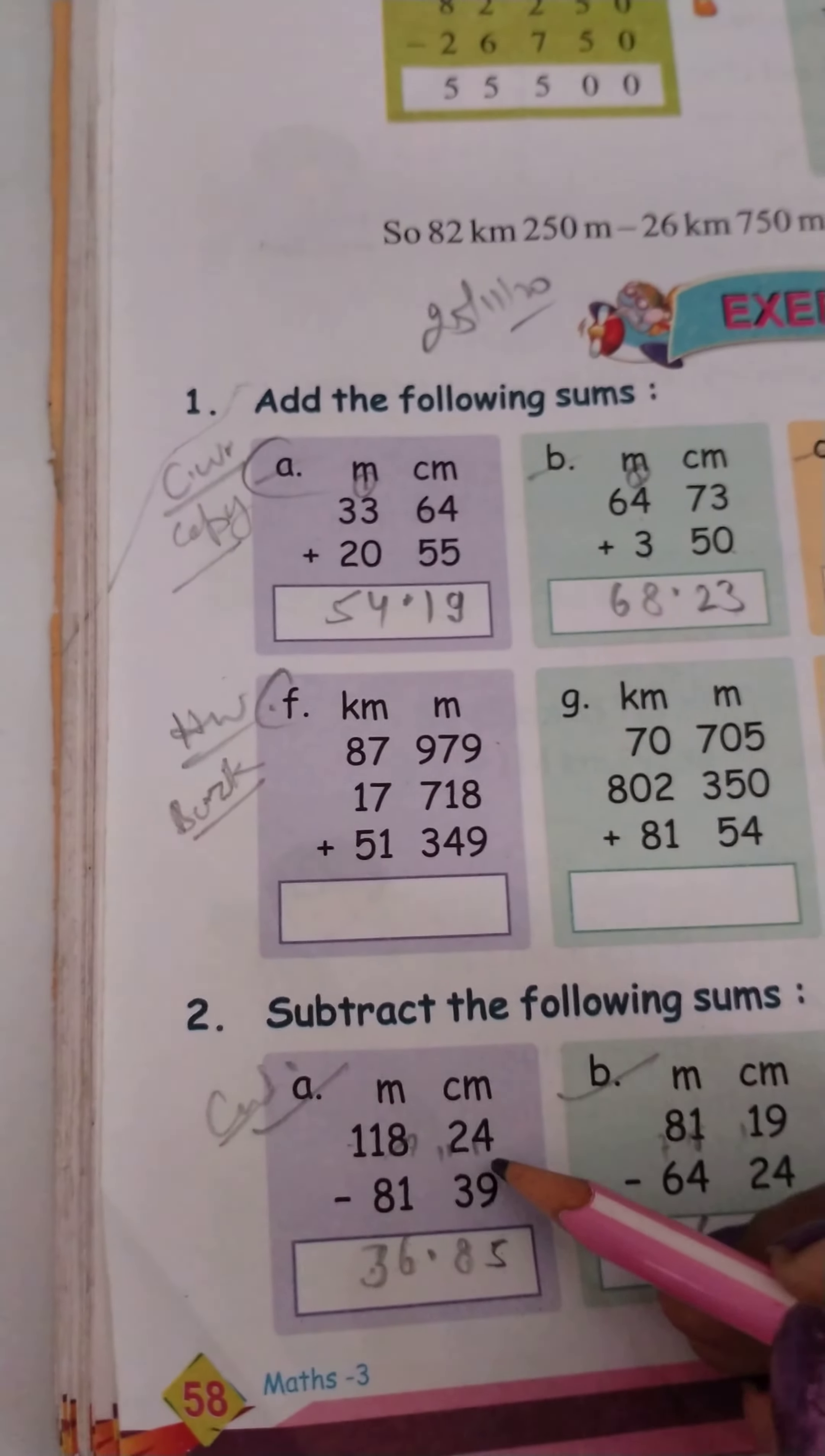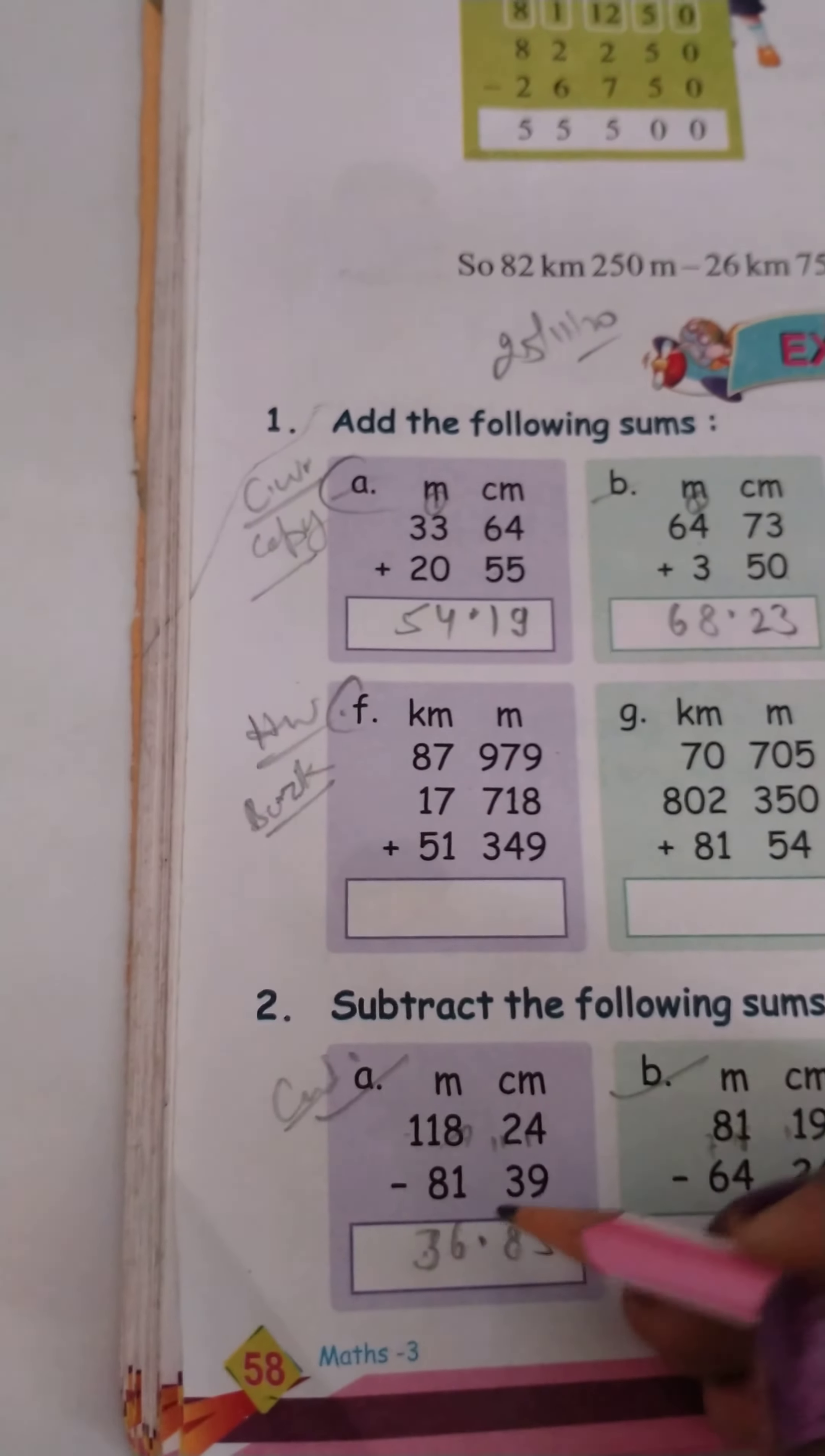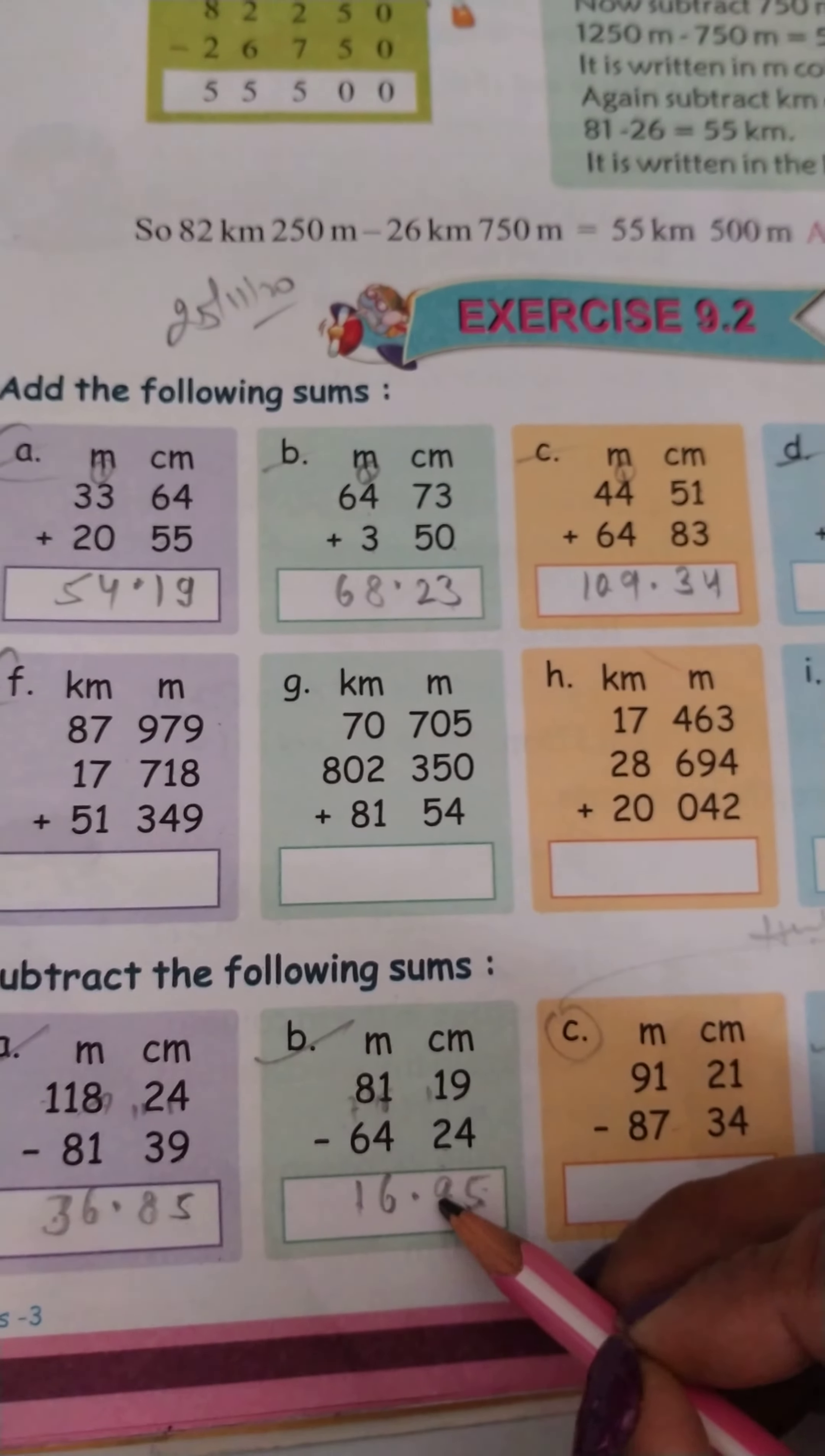4 minus 9 is not possible, then we carry. 14 minus 9 is equal to 5. Here we have 1, so 11. 11 minus 3 is equal to 8. Here we have 7. And here we have 11. 11 minus 8 is equal to 3. 9 minus 4 is equal to 5. 11 minus 2 is equal to 9.